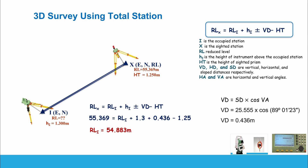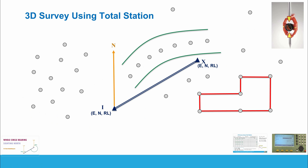To summarize what you've learned today: how to calculate the reduced level of a secondary control station from a primary control station, and then how to survey a whole area and calculate the 3D coordinates of all measured points from your secondary control station. I hope you found this video useful and enjoyed it.